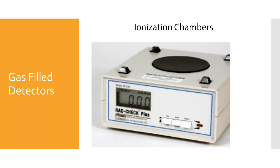Now that we are aware of how gas-filled detectors work, let's look at some examples. The first is an ionization chamber. These devices are highly accurate. The chamber of gas is inside the device, and as the radiation interacts with the gas atoms, the number of freed electrons is proportional to the radiation causing the ionizations. Ionization chamber devices are often used to test the output of X-ray tubes, as well as detect radiation in fluoroscopic systems and nuclear medicine generators.